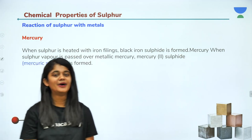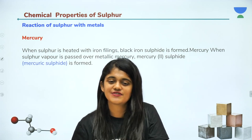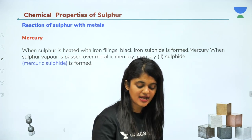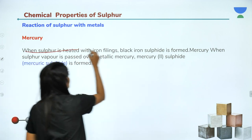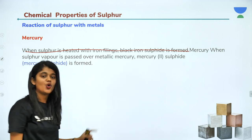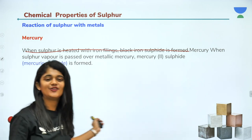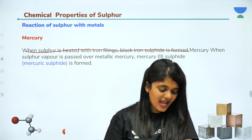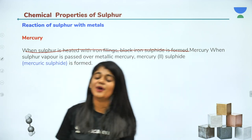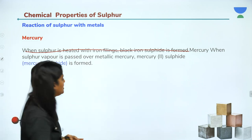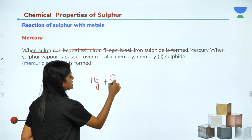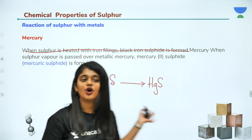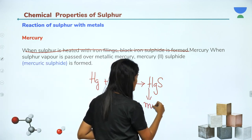The next metal is mercury. When sulfur vapour is passed over metallic mercury, mercuric sulfide is formed. The formula for mercuric sulfide is HgS. These are the reactions of sulfur with metals.